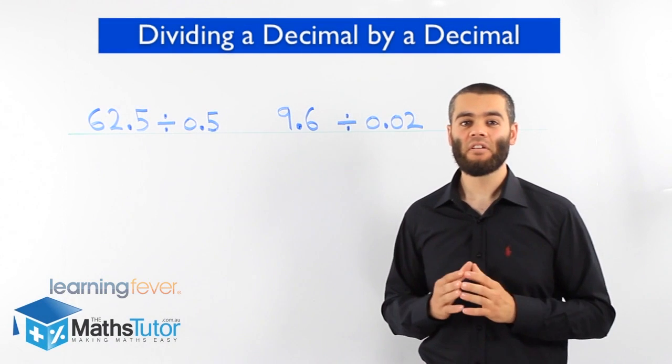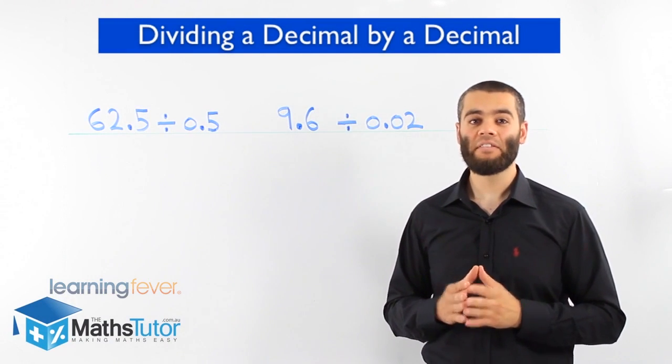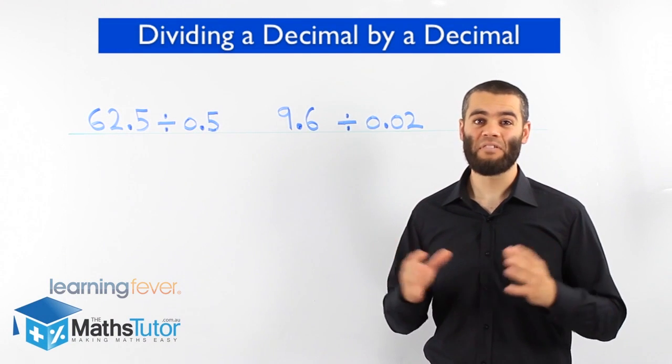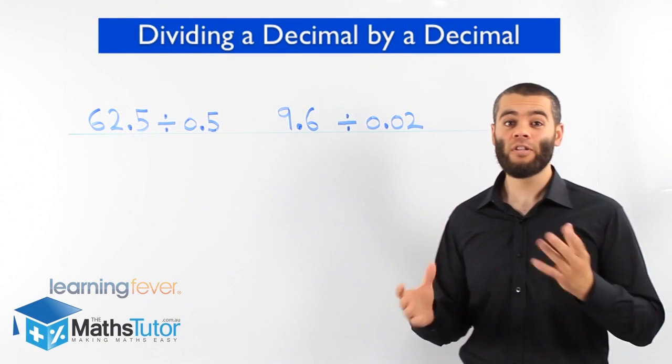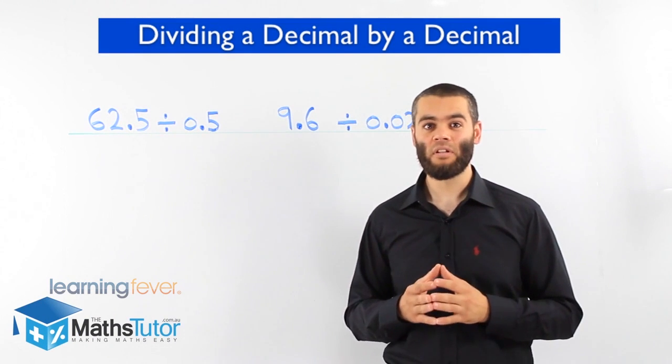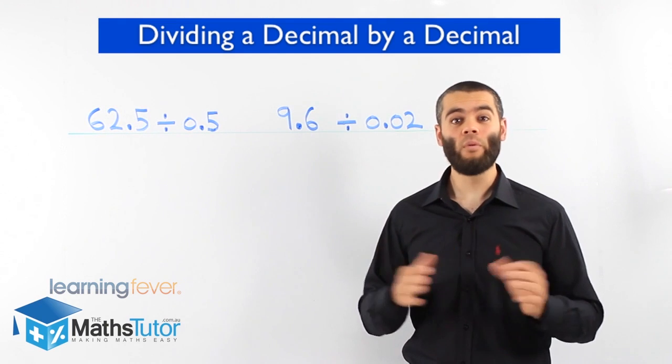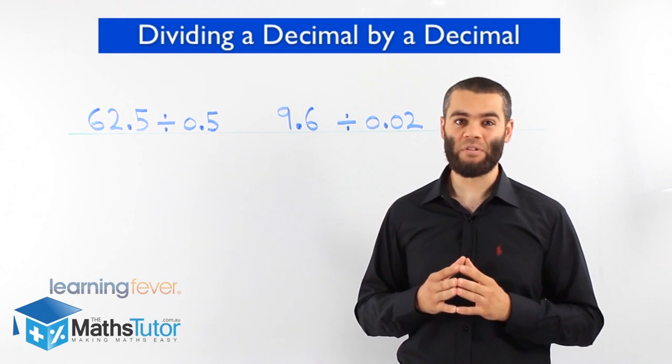Alright. So you've noticed that now you need to divide a decimal by a decimal. How is that done? Well, guess what? It actually can't be done. You can't divide a decimal by a decimal. It just can't. That's the rule. So what do we do? I'm going to show you how it's done.